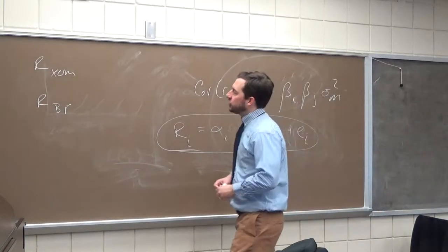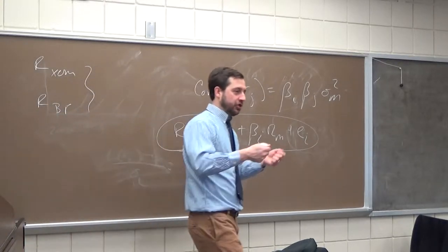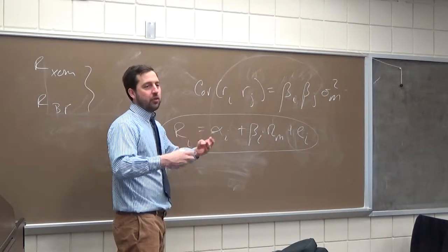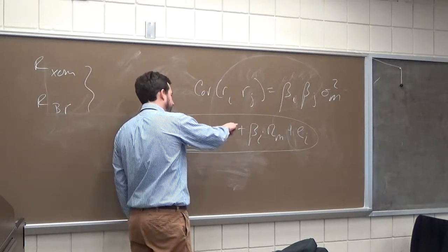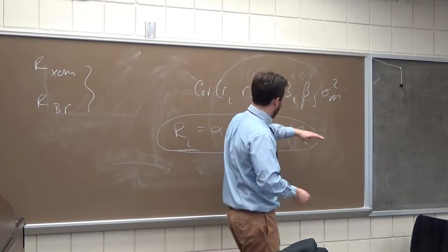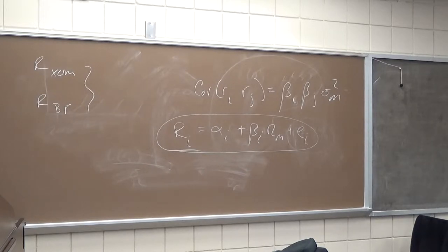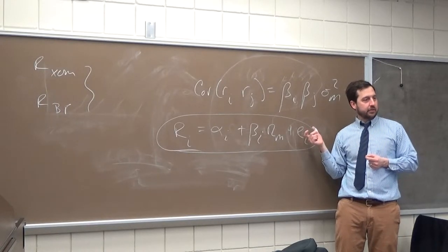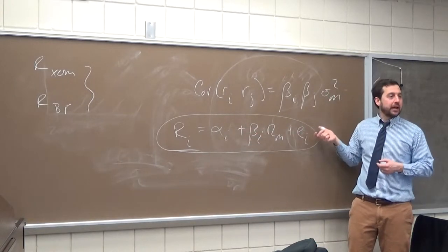In other words, these stocks should have a fairly substantial correlation due to industry effects. This is something for you to know conceptually — don't worry about quantifying it on an exam. If we estimate this model for both Exxon and BP, what's going to happen is our error terms are going to be correlated between these two stocks, because we're not taking into account the industry effects. If this is a proper model, the error terms should not be correlated — they should be orthogonal. But because we're leaving out industry effects, the error terms will likely be correlated.